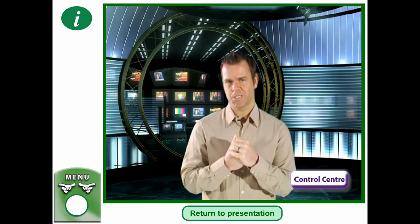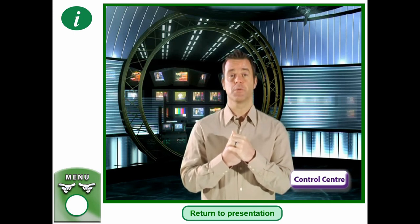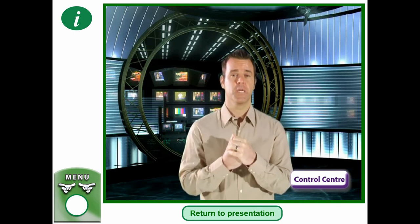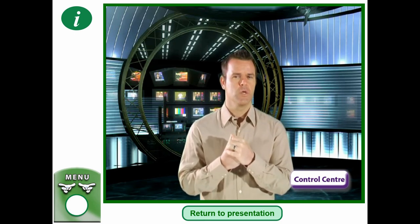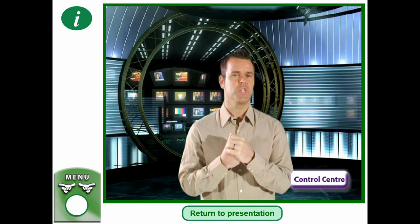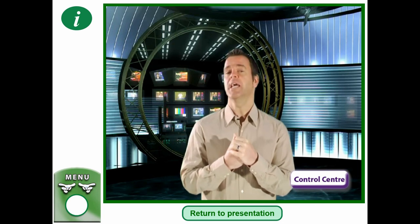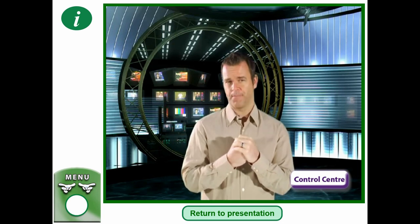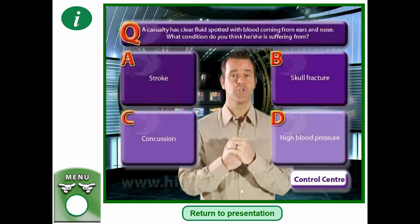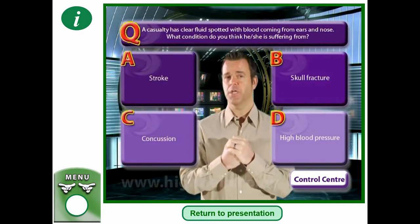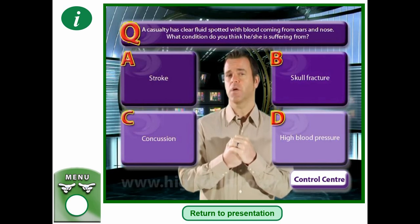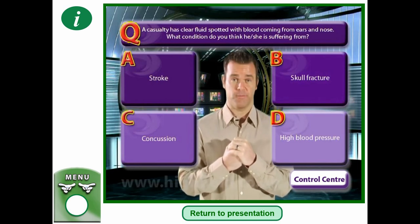Next question: a casualty has clear fluid spotted with blood coming from the ears and nose. What condition do you think they are suffering from? Is it A — stroke, B — a skull fracture, C — concussion, or D — high blood pressure?